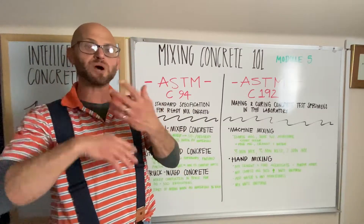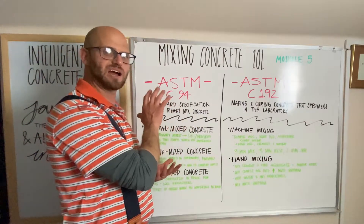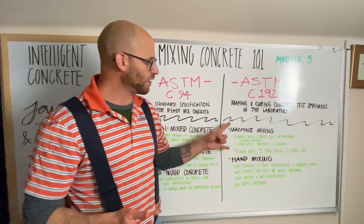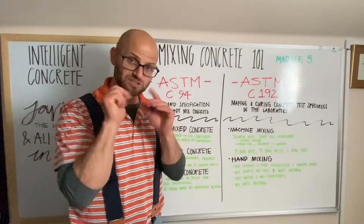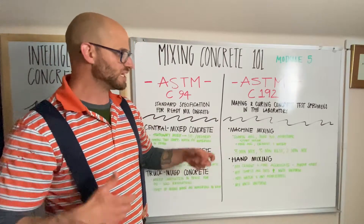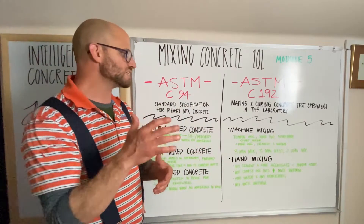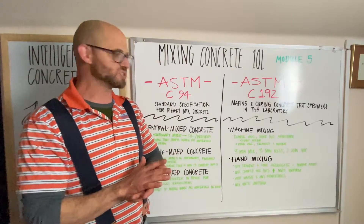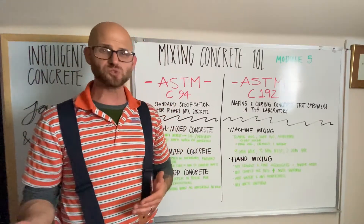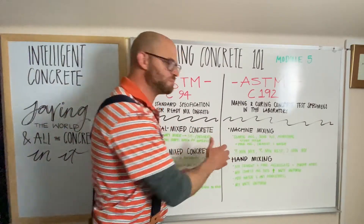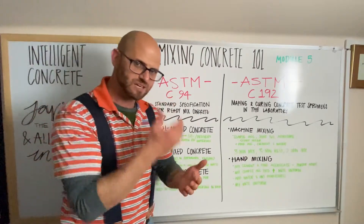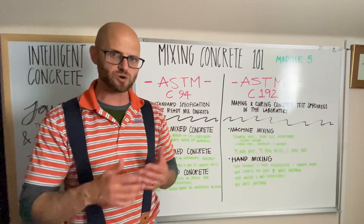First, we have to butter up the mixer, which we don't normally see in ready-mix operations because it would cost a lot of money and time. We butter the mixer to account for the paste lost when we take the concrete out. Then we put in our coarse aggregate, some water, mix for a certain time, and add admixtures if necessary. Then we add our fine aggregate, cement, and remaining water. We follow a 3-3-2 mixing time: three minutes of mixing, three minutes of rest, and then two final minutes of mixing. Then we discharge it into our receptacle and start testing.